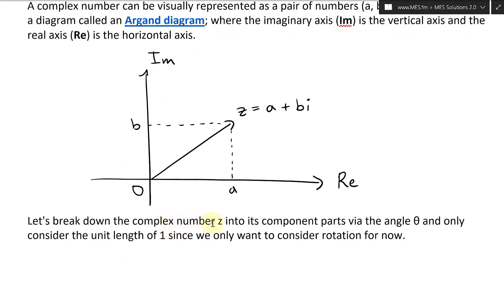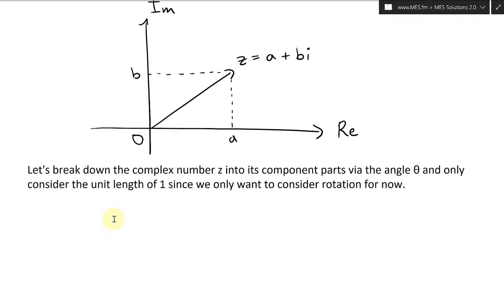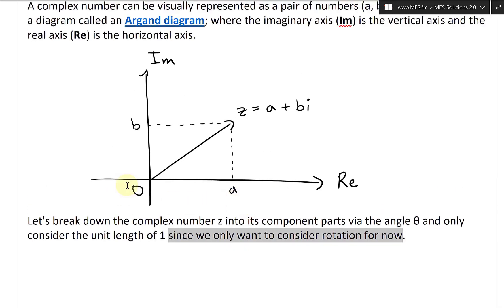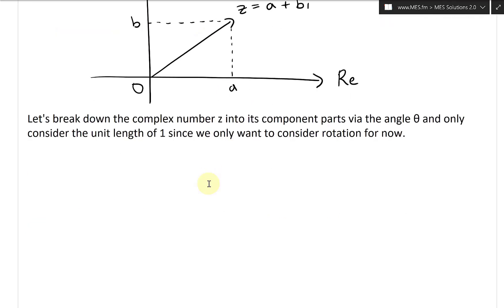Now let's break down the complex number z into its component parts via the angle θ and only consider the unit length of one since we only want to consider rotation for now. So we don't want to deal with the length, we just care about the rotation from this axis there.